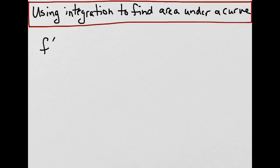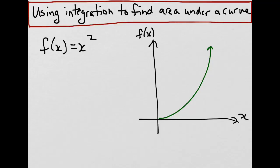Let's say that we had a function f of x equals x squared, which we can draw on a grid, and let's say that we were interested in finding the area under this curve from x equals 0 to x equals 1.